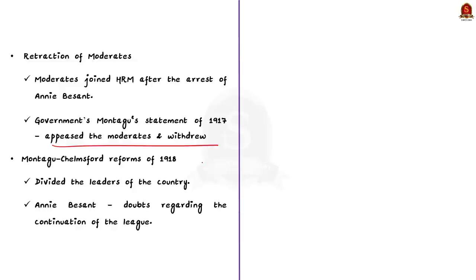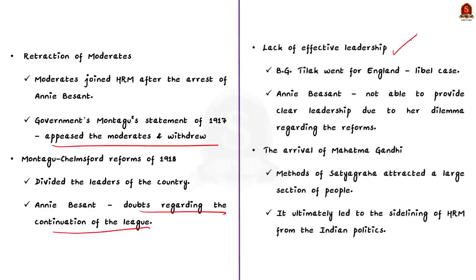Third, the Montague-Chelmsford Reforms of 1918 further divided the leaders; Annie Besant herself had doubts regarding the continuation of the league due to the announcement of the reforms. Fourth, lack of effective leadership: Bal Gangadhar Tilak went to England in September 1918 due to a libel case, and Annie Besant could not provide clear leadership due to her dilemma regarding the reforms, leaving the Home Rule Movement without a leader. Finally, the arrival of Mahatma Gandhi and his methods of ahimsa attracted a large section of the people, ultimately sidelining the Home Rule Movement from Indian politics.